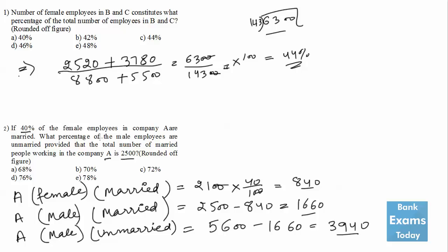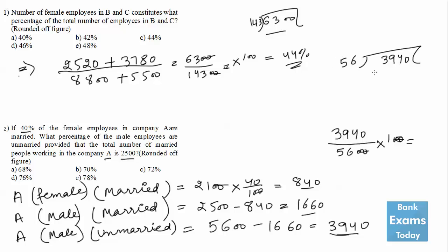We need to find what percentage of male employees are unmarried: 3940 ÷ 5600 × 100, which comes to around 70.35%. So 70.35% is the answer to question 2.